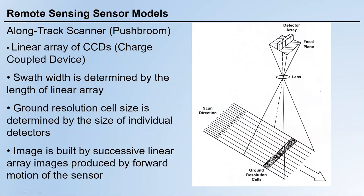This array of sensors looks at a specific line simultaneously, and each detector is responsible for a specific pixel or cell. When the sensor moves along its direction, we have multiple scan lines — similar to the whisk broom system. But this time, the scan lines are parallel to the direction of movement rather than perpendicular to it.